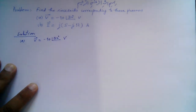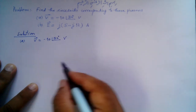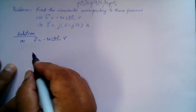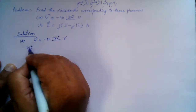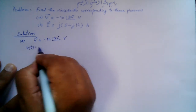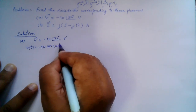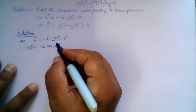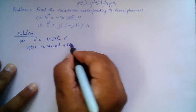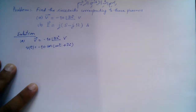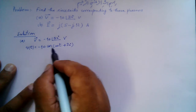In the time domain this can be represented as V(t) equals minus 10 cosine of (ωt plus 30 degrees) volts. To express it in the form of a standard function, we need to remove this negative sign and transform it into a positive cosine function.